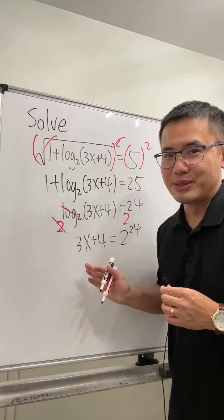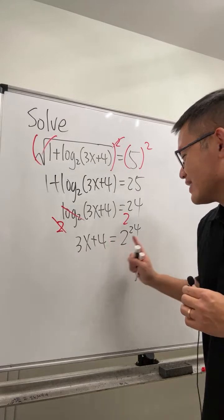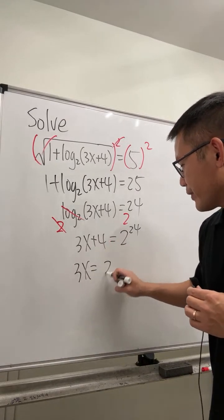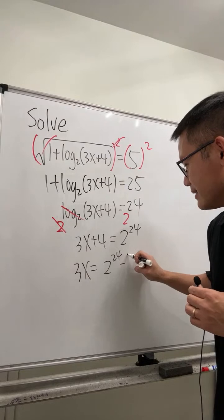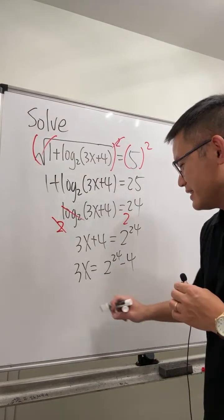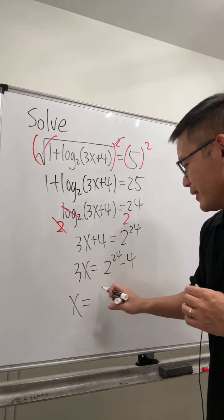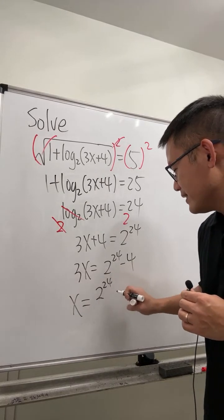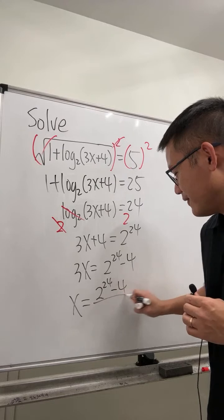Minus 4 on both sides, so we have 3x equals 2 to the 24 minus 4. And finally, divide 3 on both sides. X equals this crazy number: 2 to the 24th minus 4, divided by 3.